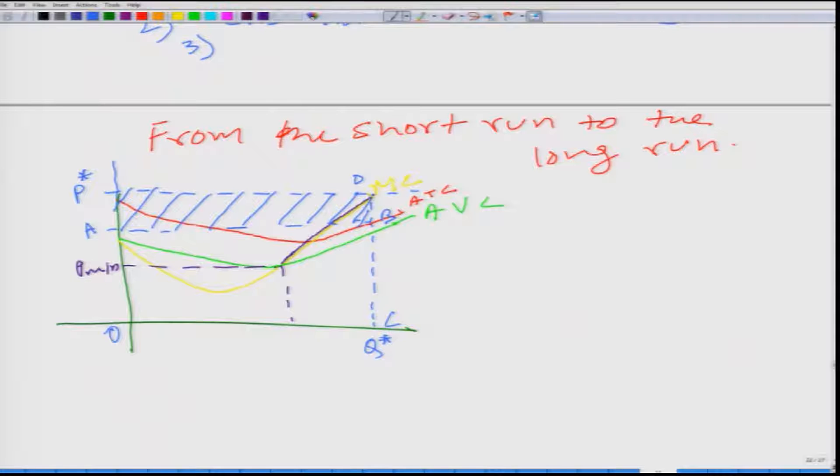What it would do, it would incentivize other entrepreneurs to enter the market. Because this firm is earning a profit which is more than normal profit and it is clear from the graph that this particular firm is earning a positive profit. And this positive profit would induce several other entrepreneurs to enter in the market.